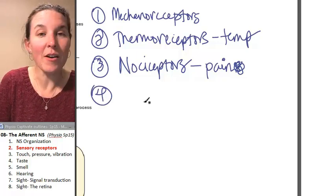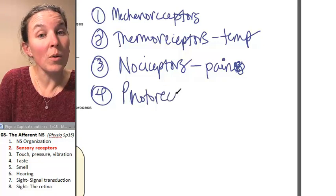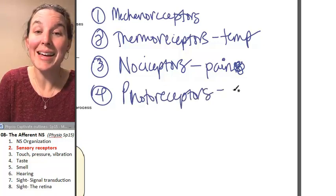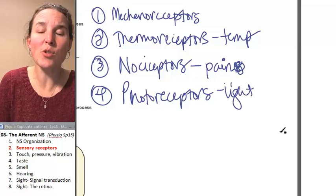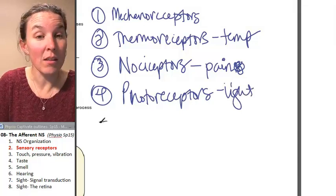Number four, we have photoreceptors. What do you think they respond to? Light. Photoreceptors respond to light, and there's only one place that we have them. That would be your eyeball.